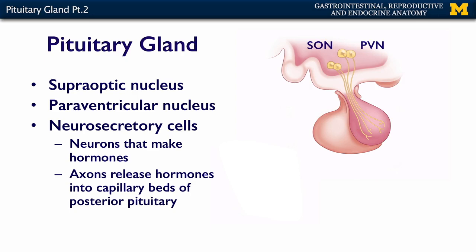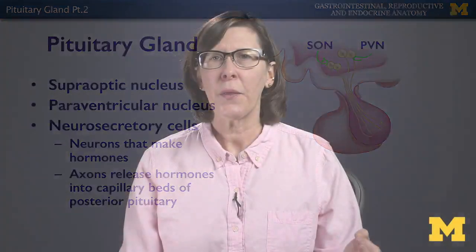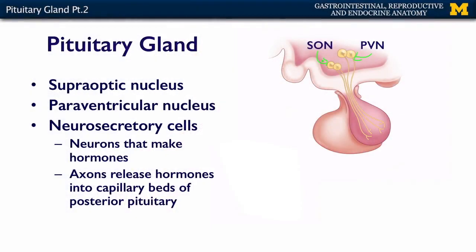The supraoptic nucleus and the paraventricular nucleus, kind of here and here, contain neurosecretory cells. Neurosecretory cells are neurons, but instead of synapsing on another neuron, when they're activated and send an action potential down their axons, it results in the release of a neurohormone rather than a neurotransmitter. That neurohormone is then released into the vascular bed of the posterior pituitary gland.